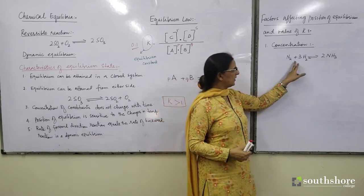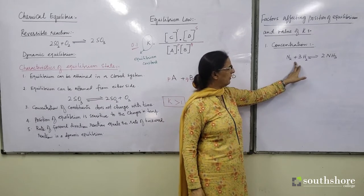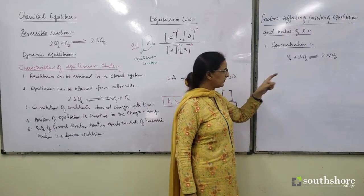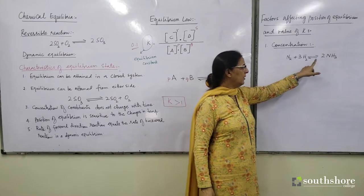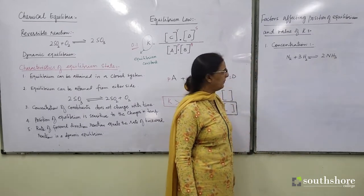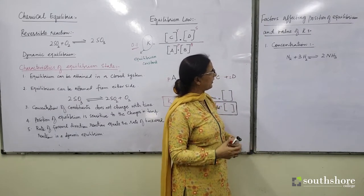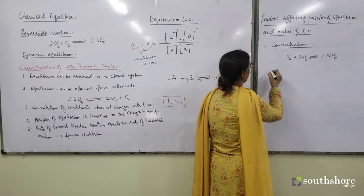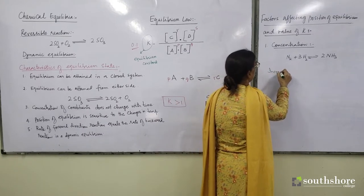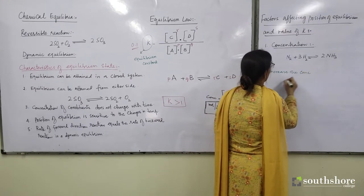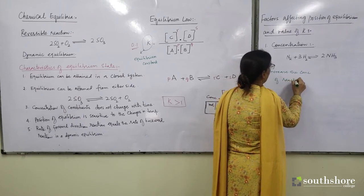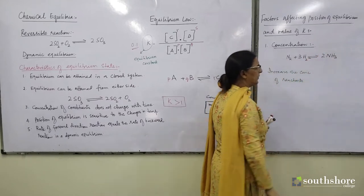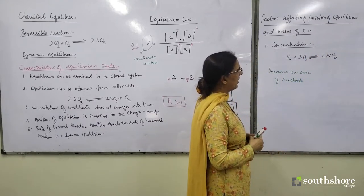We have done this equation many times — it is the manufacture of ammonia by Haber's process. If I am going to see the effect of changing the concentration and I increase the concentration of reactants — one or both — you will have more of the reactants to react together to give you more of the product. That means it is going to shift the position of equilibrium.